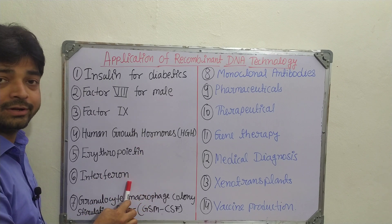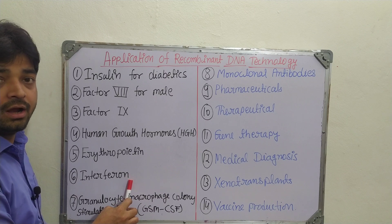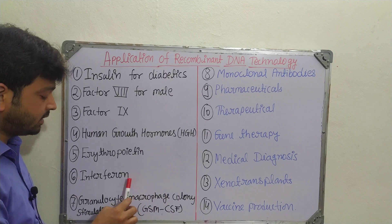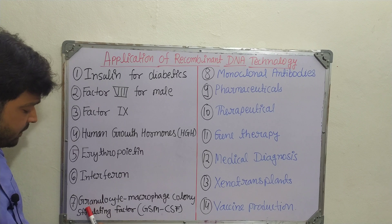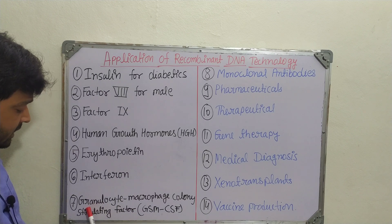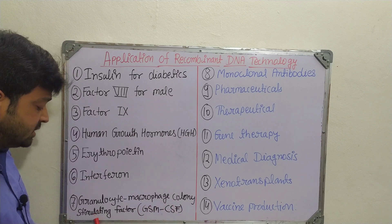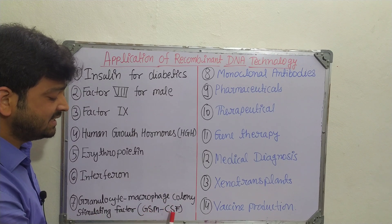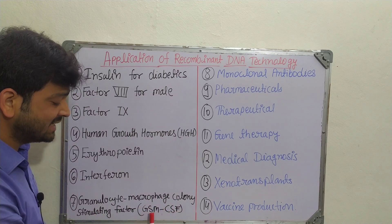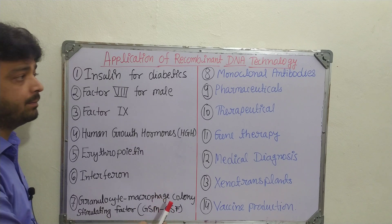The sixth application is interferon, an important constituent in human immunity, which can be produced using this technology. The seventh is Granulocyte-Macrophage Colony Stimulating Factor (GM-CSF), which can also be prepared using recombinant DNA technology.